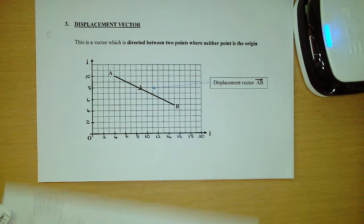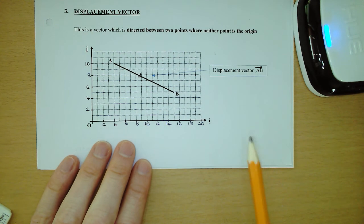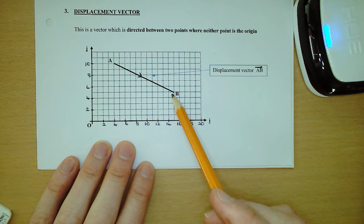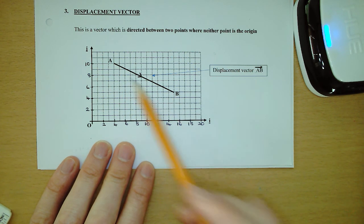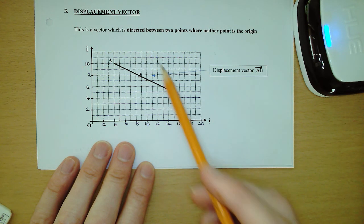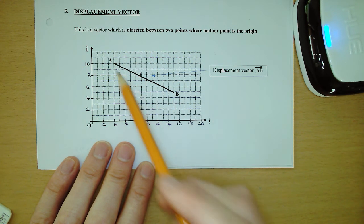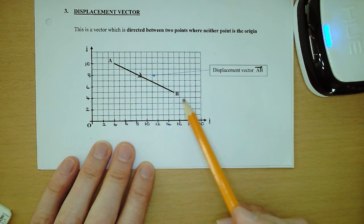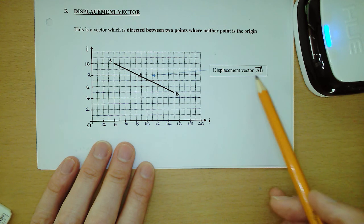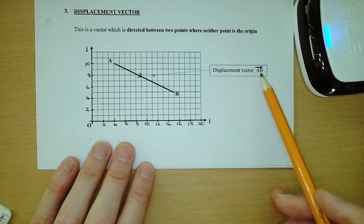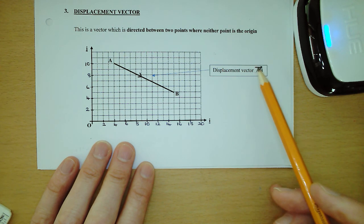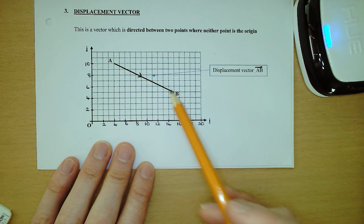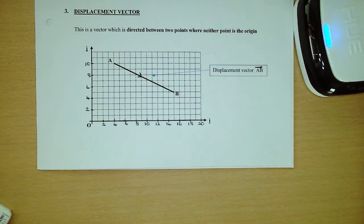The final thing is a displacement vector. A displacement vector always joins two points, but neither of them is the origin, and it's directed between the two points. You can see here that this is the displacement vector that joins point A to point B — note that neither of these points are the origin. We can label the vector using capital letters: AB, with the arrow going from A to B, because that's the direction the vector is moving.